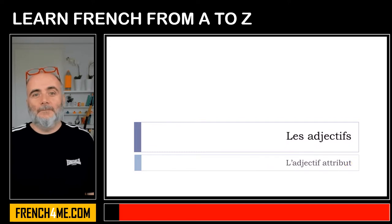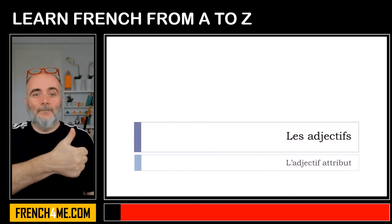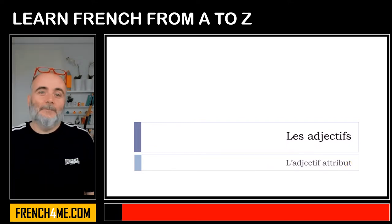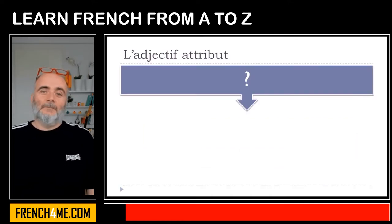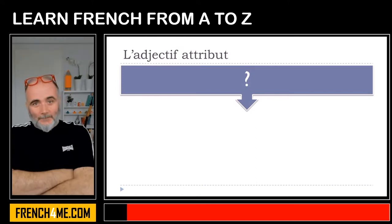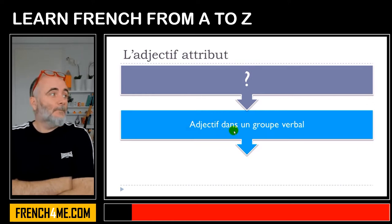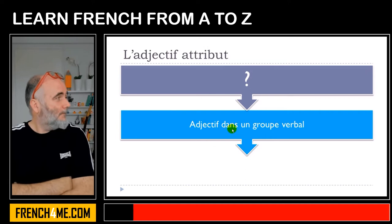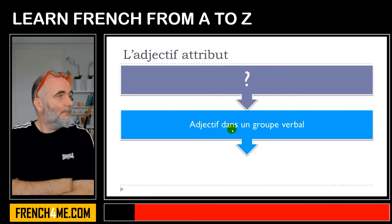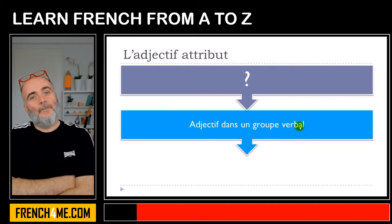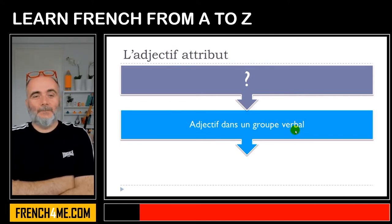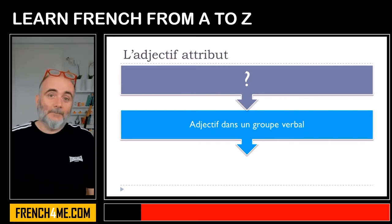We saw in the previous video l'adjectif épithète, and we'll continue with l'adjectif attribut in this video. So the question is: what is l'adjectif attribut? Well, l'adjectif attribut is an adjective, and it will appear dans un groupe verbal — in a verbal group. So it means that you will need to have at least one verb that will somehow introduce this adjective.